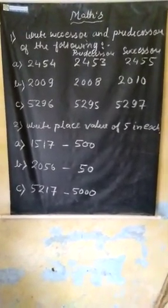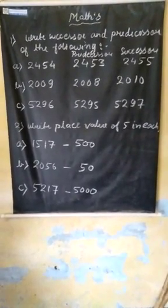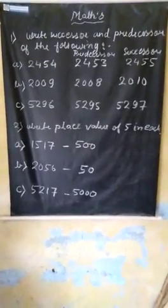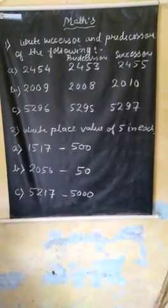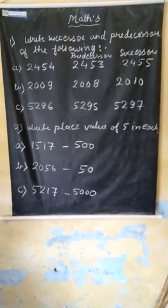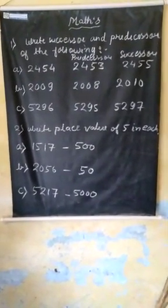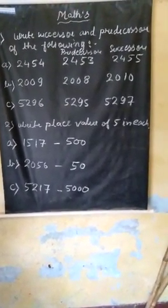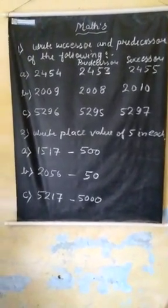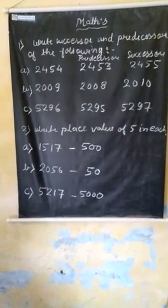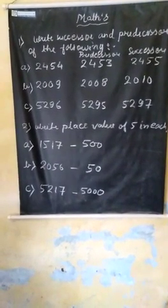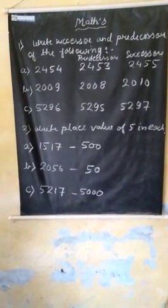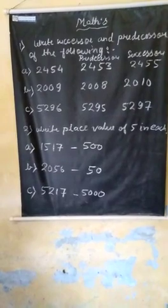Here, the given number is 2009. To get the predecessor, we subtract one from nine, it will be 2008. We can use ascending or descending order to get the predecessor or successor. So we get 2008 as the predecessor, and we can add one to nine to get 2010 as the successor of 2009.